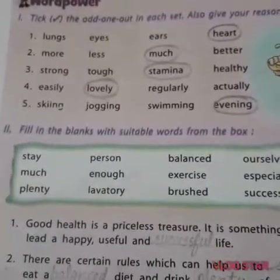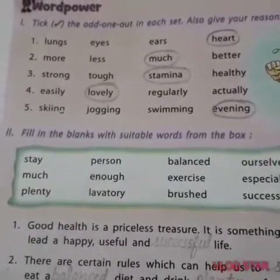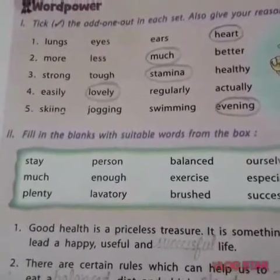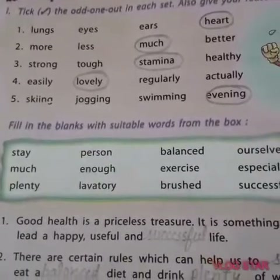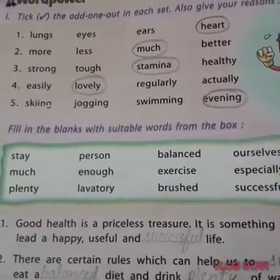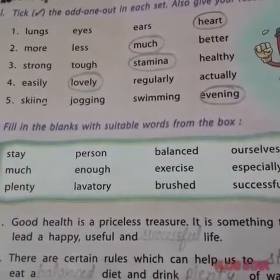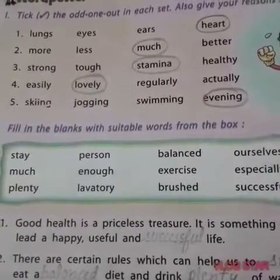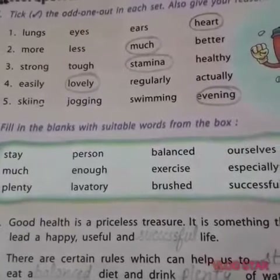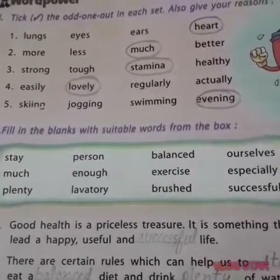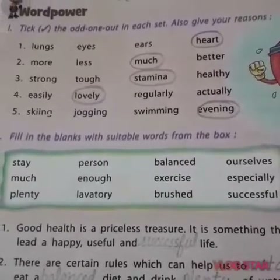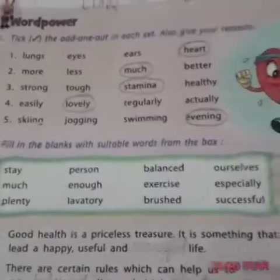The third one is: strong, tough, stamina, and healthy. I have circled 'stamina'. Why? Because stamina is a noun and all others — strong, tough, and healthy — are adjectives.